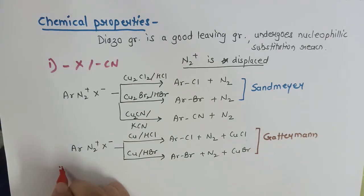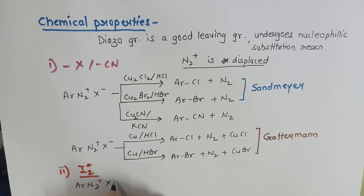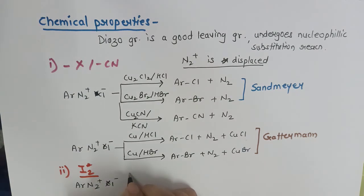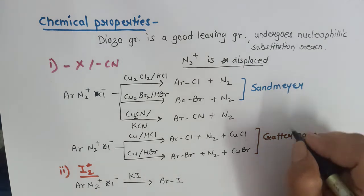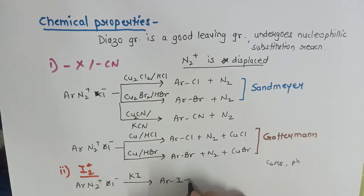The next nucleophilic substitution reaction is for introducing the iodide group. Benzene diazonium chloride when treated with potassium iodide gives iodobenzene — where the aryl group can be written as Ar, C6H5, or Ph — along with evolution of nitrogen gas and formation of potassium chloride.